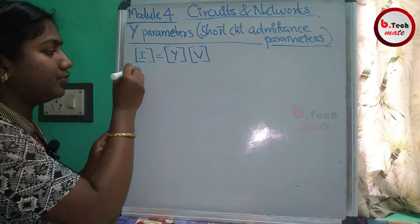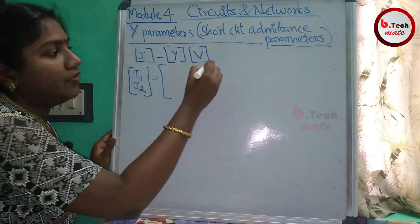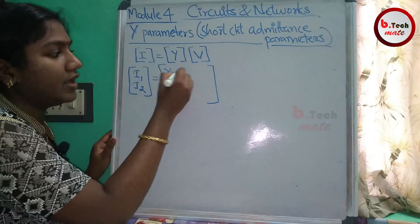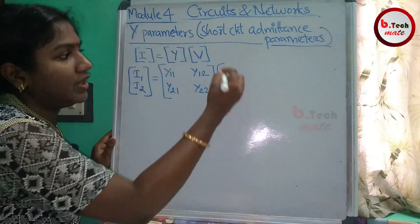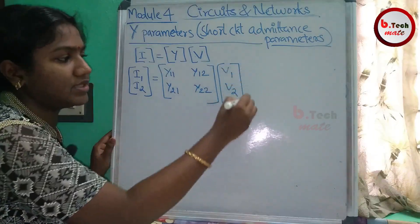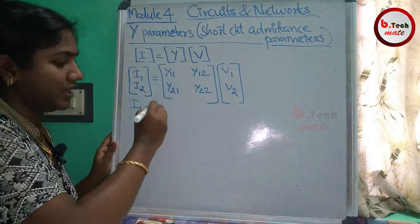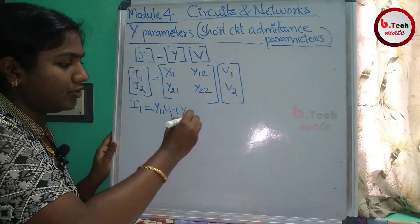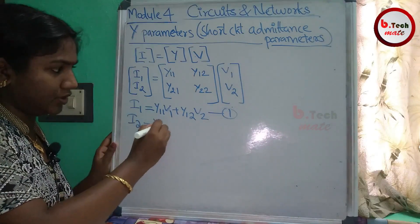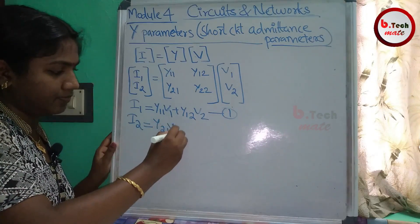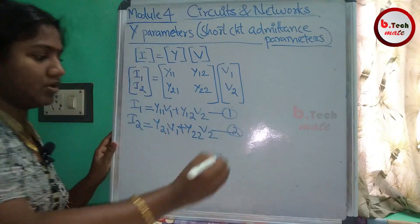Let's expand the formula. The output is I1 and I2. The Y matrix is a symmetric matrix with four parameters: Y11, Y12, Y21, Y22. The voltage input is V1 and output is V2. Multiplying the matrix: I1 equals Y11·V1 plus Y12·V2 — equation 1. I2 equals Y21·V1 plus Y22·V2 — equation 2.